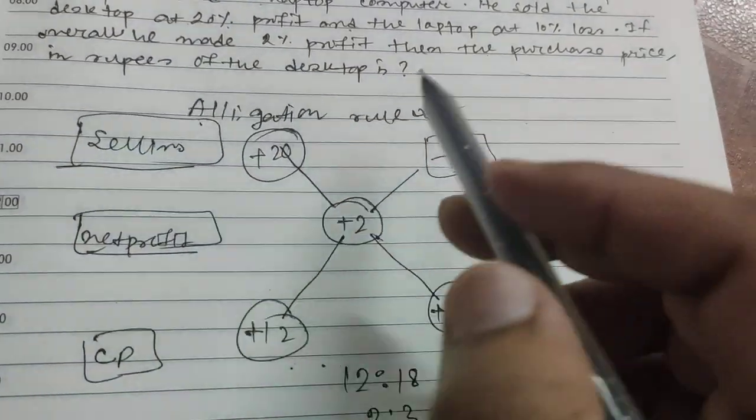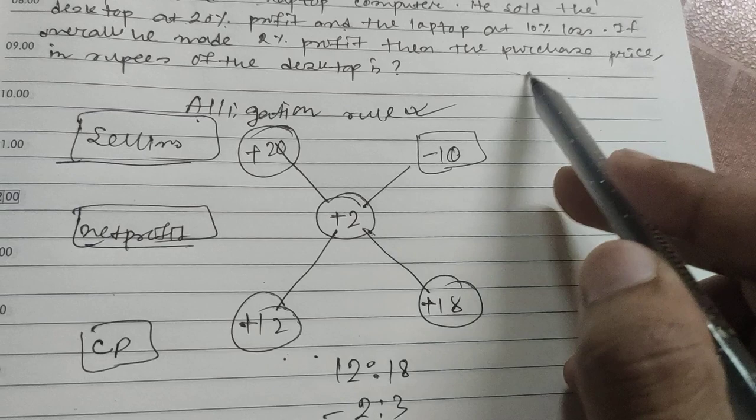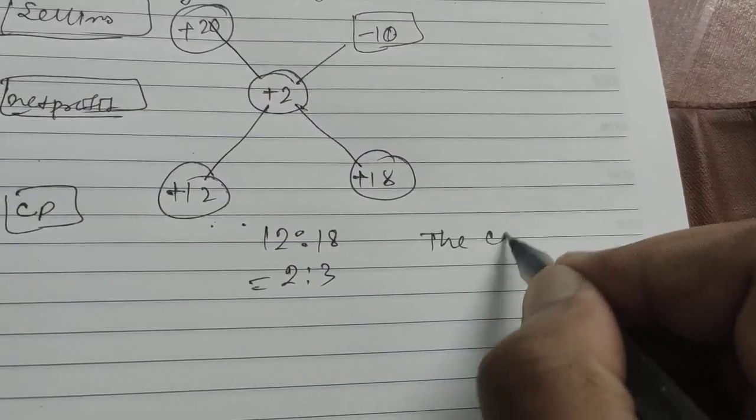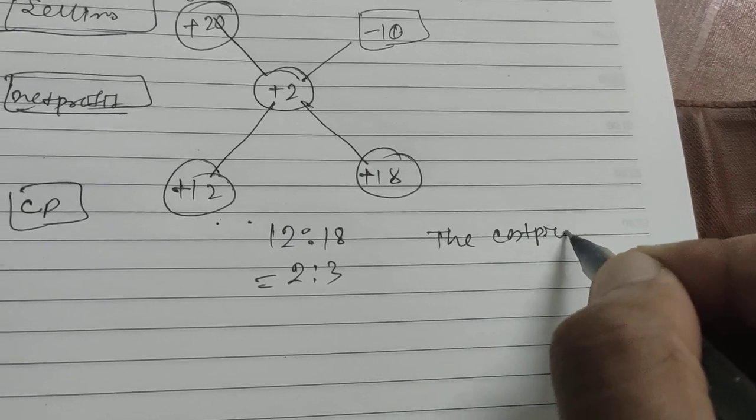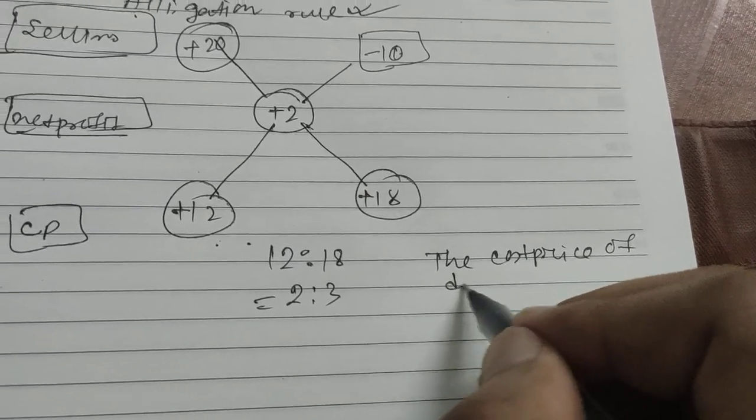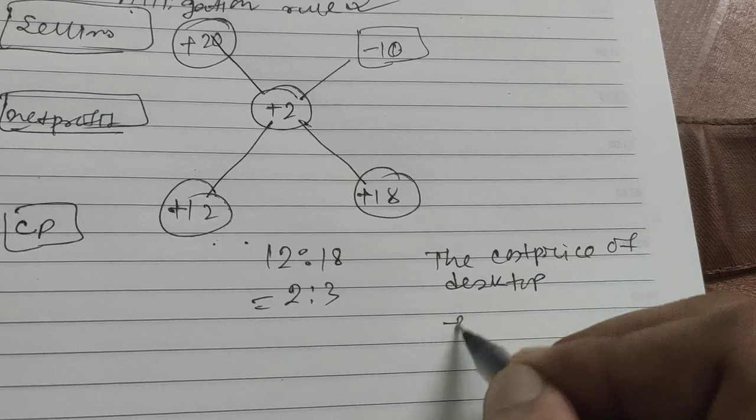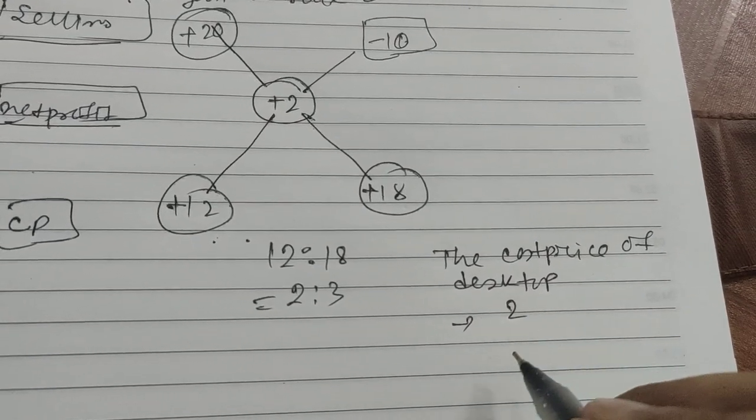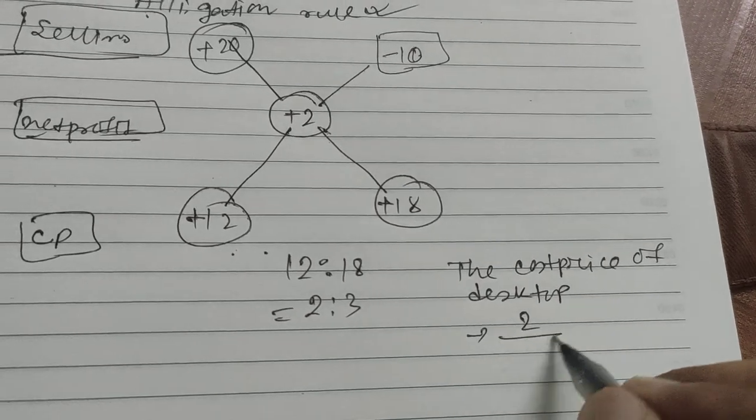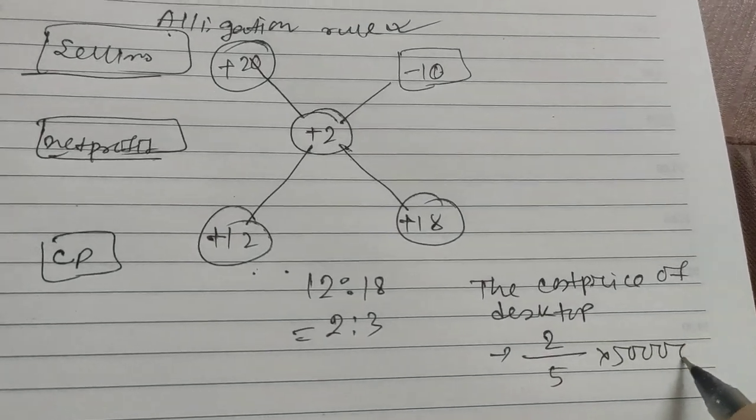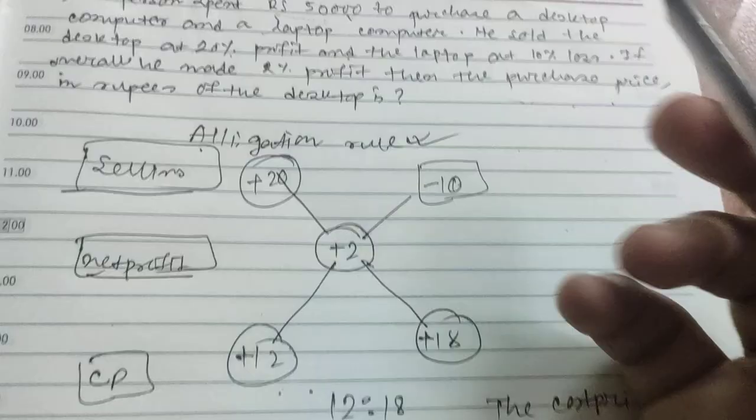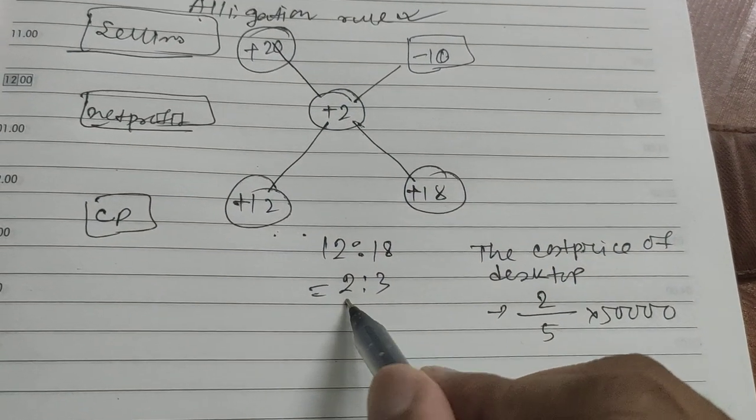The question asks for the purchase or cost price of the desktop. The cost price of desktop is 2 by 5 into 50,000, as the total cost price is given. 2 is the ratio for the laptop.